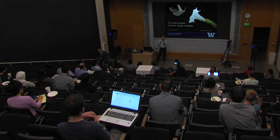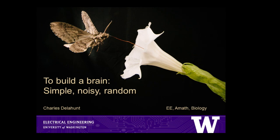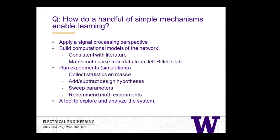Thanks for coming. Let's consider a simple brain — in particular, a moth, and the olfactory system of that moth. It has just a few thousand neurons, but that moth brain can learn new odors. It's the simplest neural system we know that can learn something new. The question is: how does this simple system learn? Given just a handful of very simple tools, how does this simple neural system actually learn new data? Our approach is to build computational models and simulate the system.